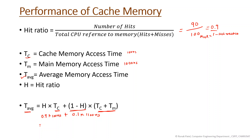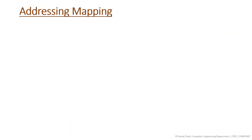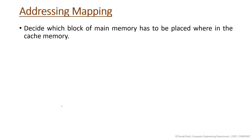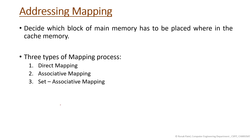Now there are different address mapping techniques. This address mapping technique decides which block of main memory has to be placed where in the cache memory — because we are copying a portion of main memory into cache and we need to decide where to put it. There are three types: first is direct mapping, second is associative mapping, and third is set-associative mapping. We will see the details of these three types of mapping in the next video.